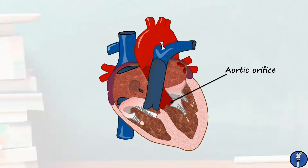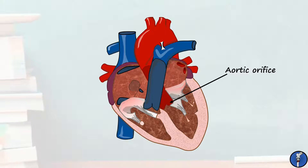The aorta then travels within the heart superiorly, anteriorly, and slightly to the right. It is closely associated with the pulmonary trunk along its route. The first part of the aorta is known as the ascending aorta, and continues upwards to the level of the second right costal cartilage, where it exits the pericardium and enters the superior mediastinum, becoming known as the arch of the aorta.